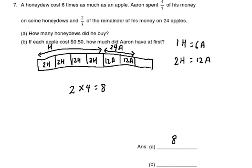Each apple costs 50 cents. How much money did Aaron have at first? One box equals 12 apples: 12 multiplied by 50 cents equals $6. So one box is $6.